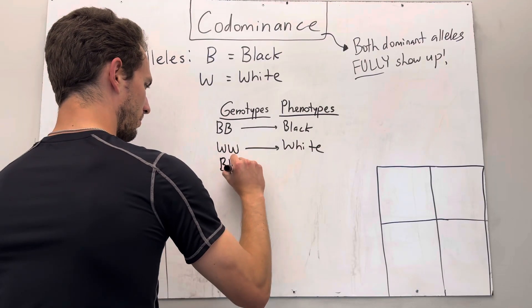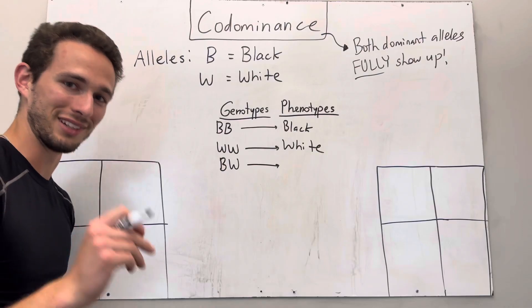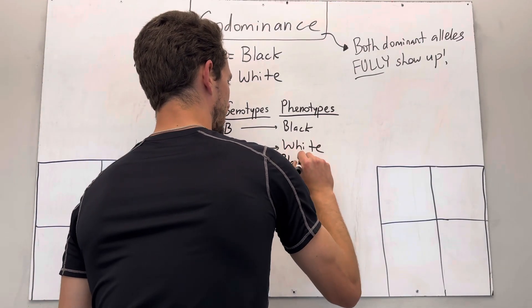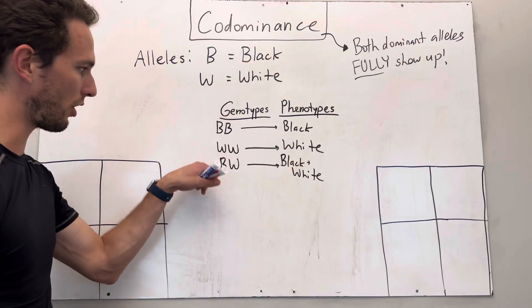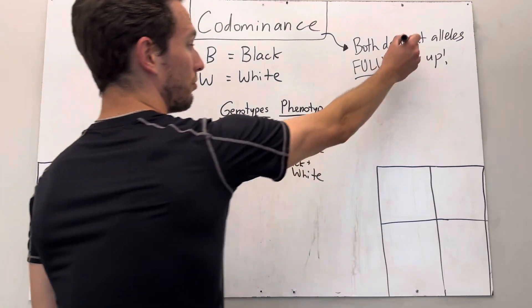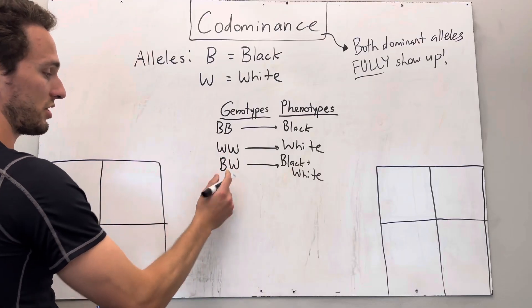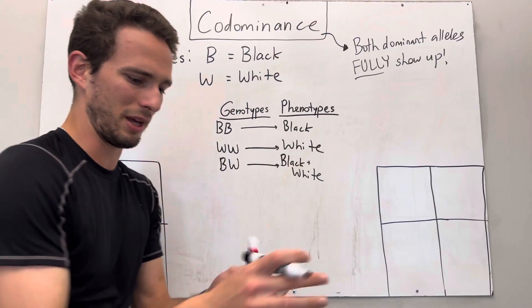However, what if we had a big B and a big W? Well, that would code for a black and white coat, so it'd be black and white. Why is that? Well, because both are dominant alleles and both will fully show up. So if we have a heterozygous, basically a big B and a big W, we're going to show both of them. So basically a black and white splotched cat.